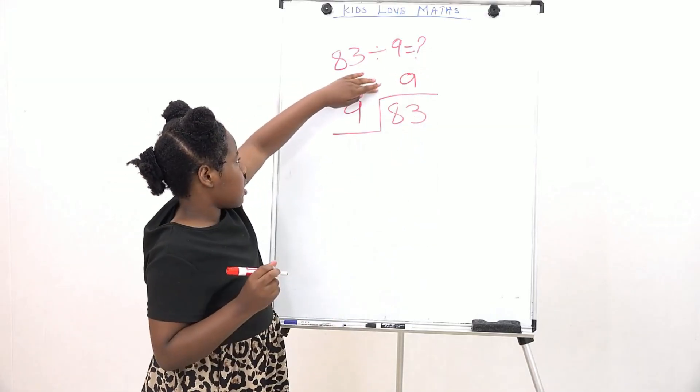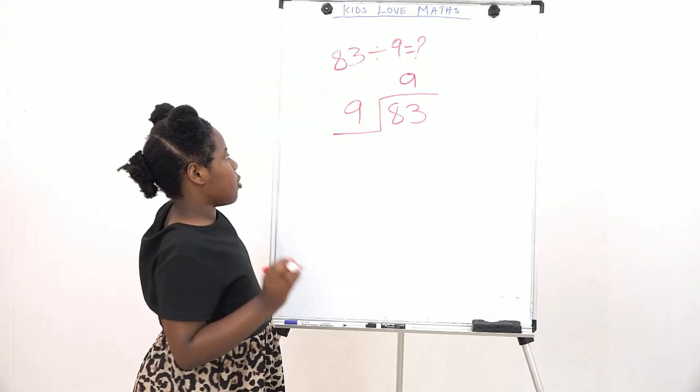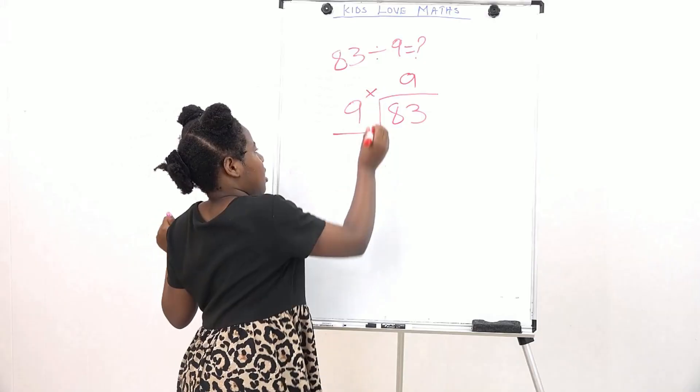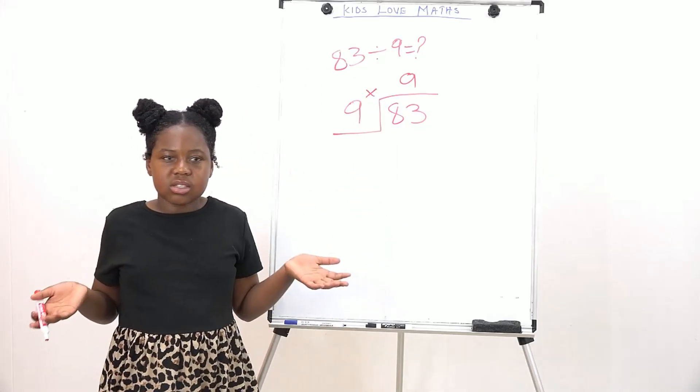Then we're going to multiply here. I like to put this side, but you don't have to. And that will give us 81.